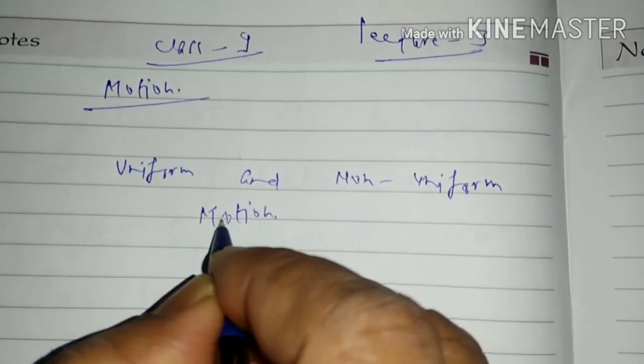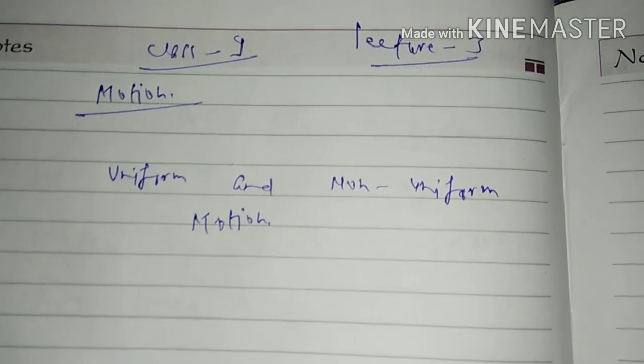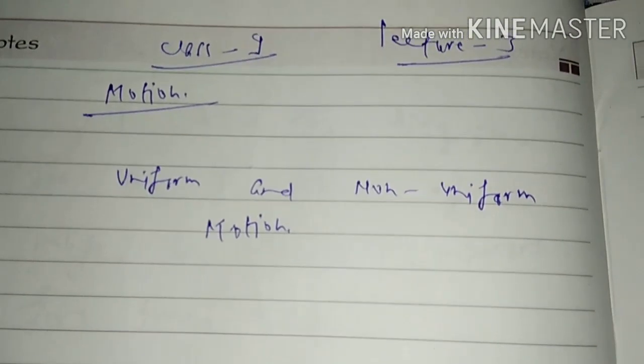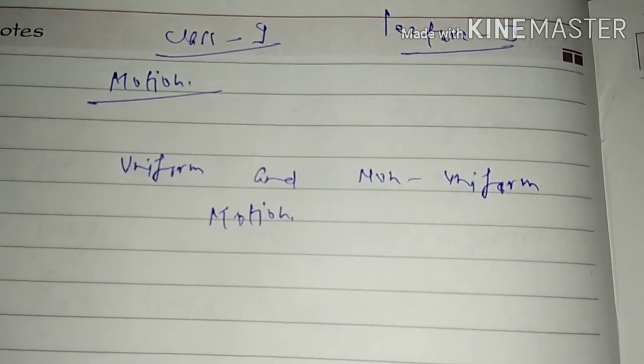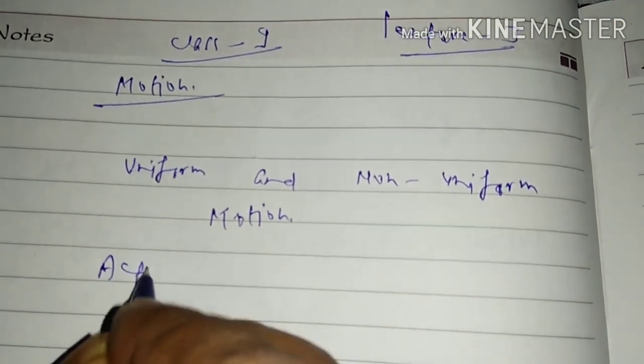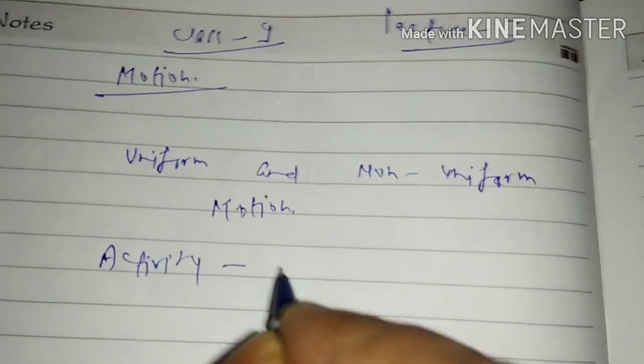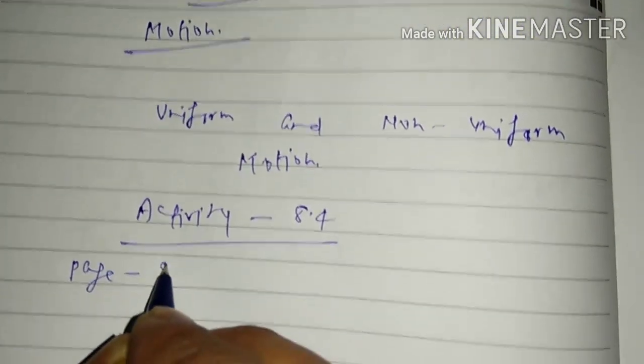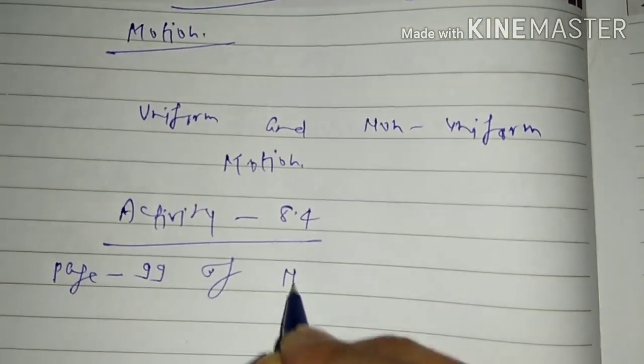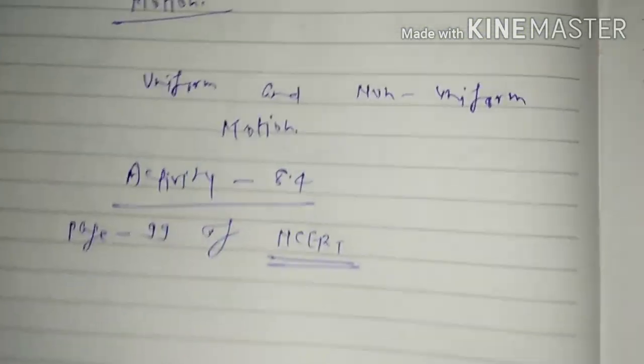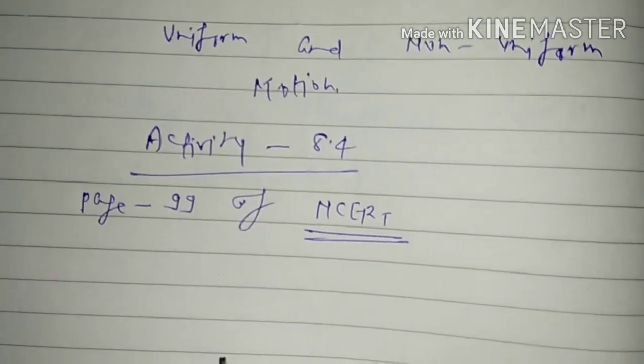But as I had to show you, I shall explain each and every activity given in our NCERT science book. So see activity 8.4 on page 99 of NCERT book. What is given in this activity? The knowledge of two devices, that is odometer and speedometer, is given.